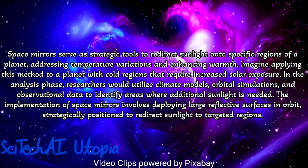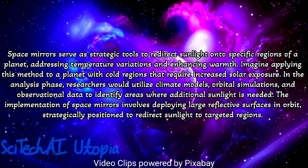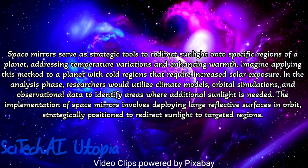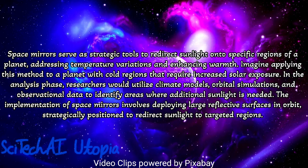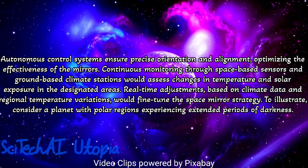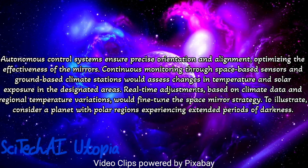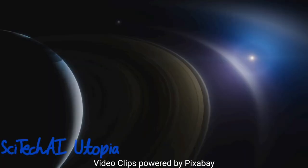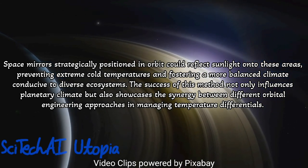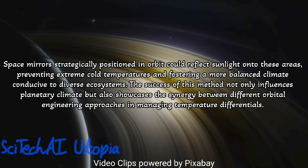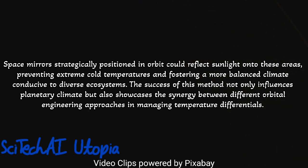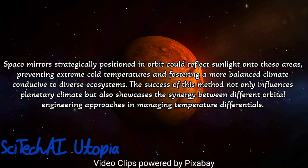Method 17: Space Mirrors (detailed deployment). Design and deploy a constellation of mirrors in orbit around the target planet, precisely positioned to reflect sunlight onto specific areas of the surface. Utilize advanced orbital dynamics calculations to optimize the arrangement of mirrors, accounting for the planet's rotation, orbit, and seasonal variations. Implement a control system that adjusts the orientation of each mirror in real-time, responding to changes in sunlight intensity and ensuring even distribution across targeted regions. Consider materials with high reflectivity and durability, and establish redundant communication and control systems to mitigate risks of mirror malfunctions.